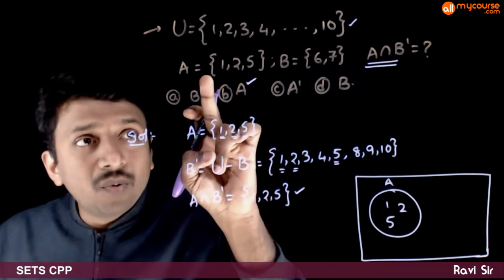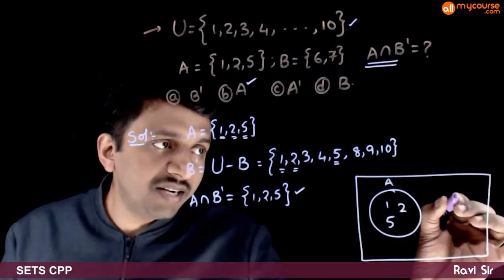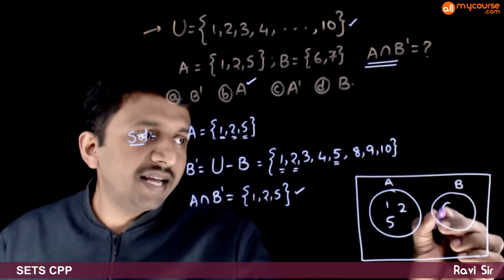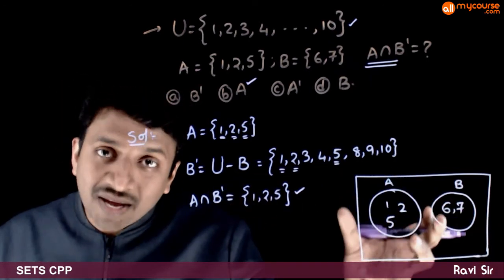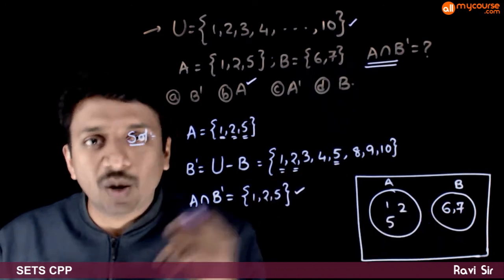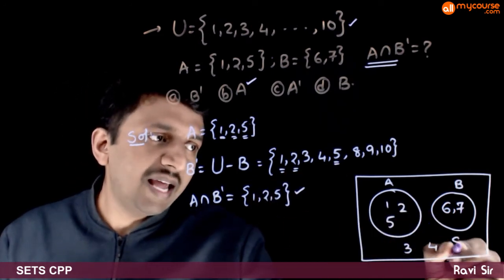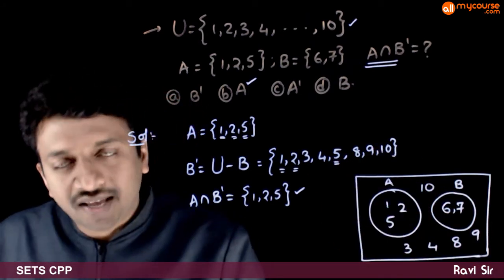Set B is the set containing 6 and 7. You can very easily see that A and B are disjoint sets. That is, they do not have any intersection. So I do not need to connect them. B contains 6 and 7, and that means the remaining elements are there in the space outside. So 3, 4, 8, 9, 10 are there outside A and B.